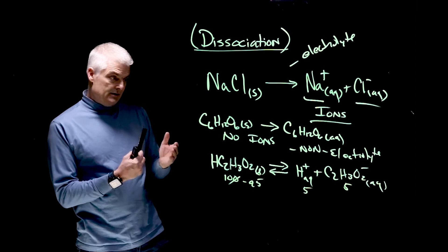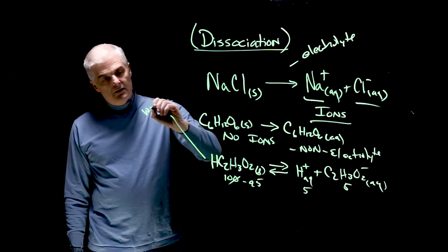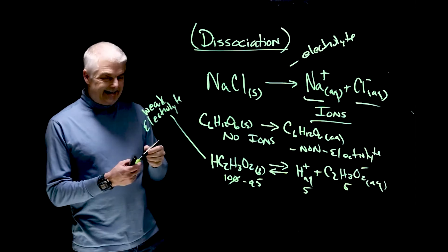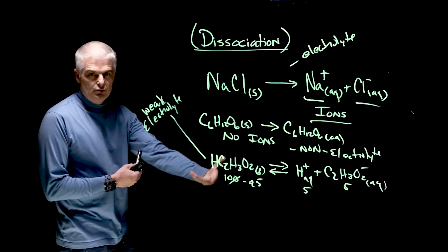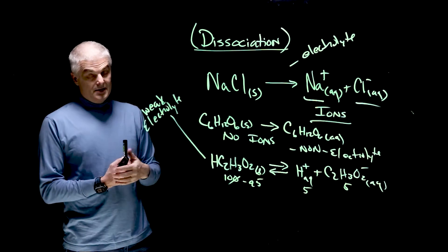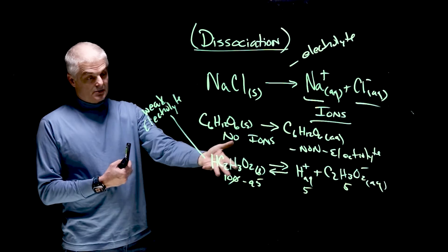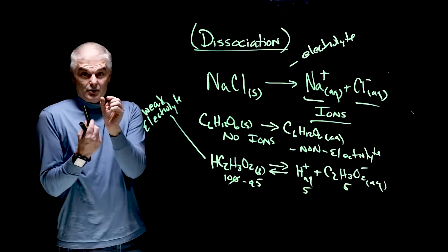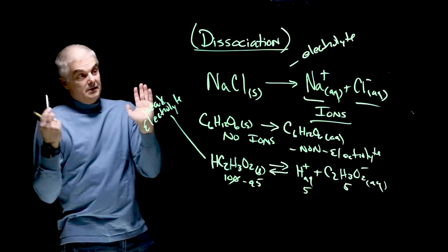Because there's some ions, a few ions, this is called a weak electrolyte, because it only makes a few ions. So if we put the light bulb in the solution, a weak electrolyte solution of vinegar, the light bulb will sort of just, it'll turn on, it'll be weak. It won't be super bright, it'll be kind of just a little bit bright.